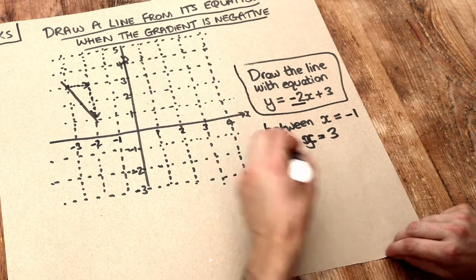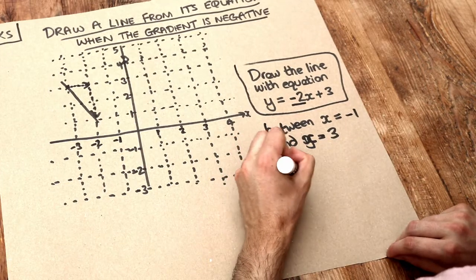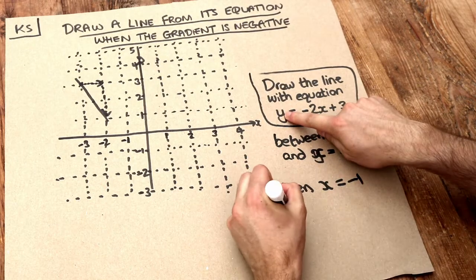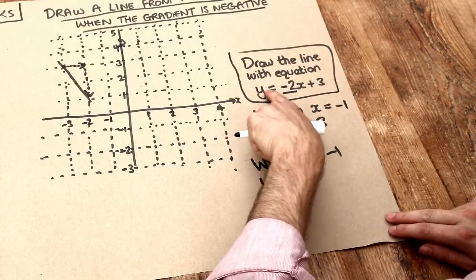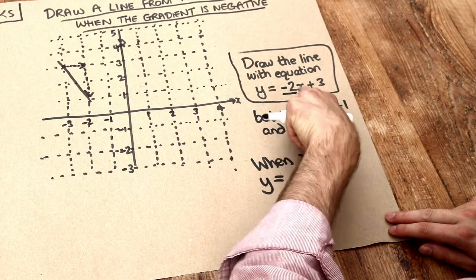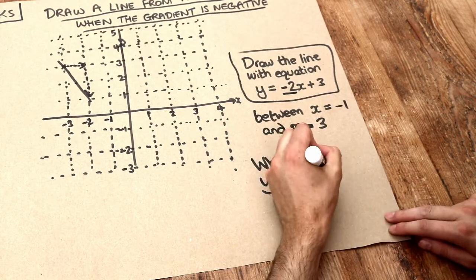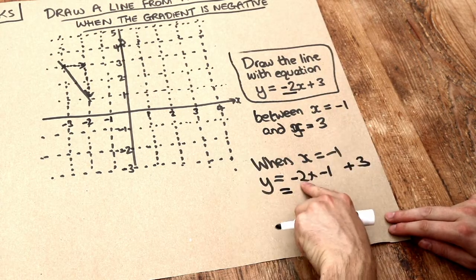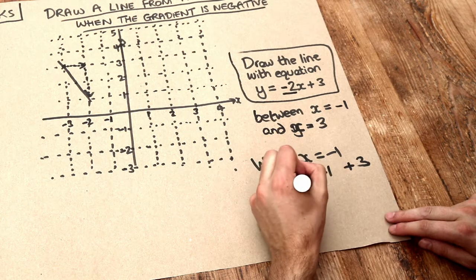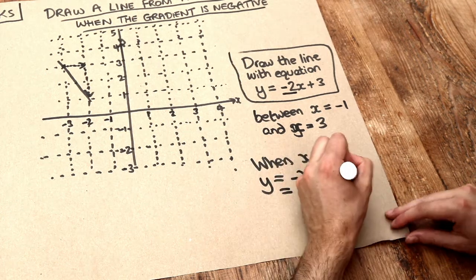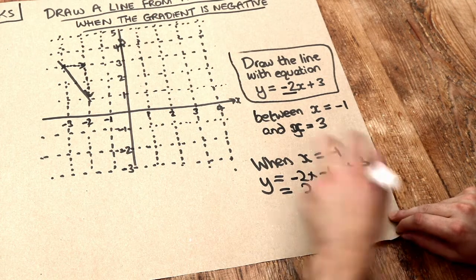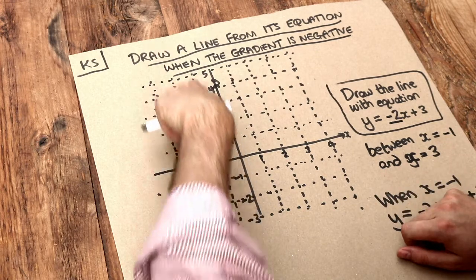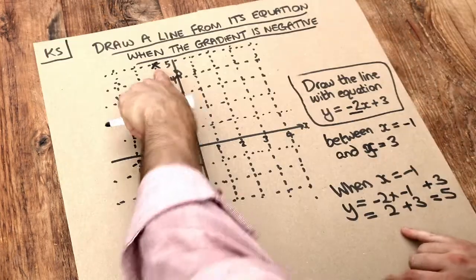So let's try it for x equals minus 1 first. When x is minus 1, we substitute it into the equation to work out what y would have to be to make the equation true. So y equals minus 2 times minus 1, plus 3. Negative times negative is positive, and 2 times 1 is 2, so it's 2 plus 3, which is 5. So when x is minus 1, y is 5 — that's minus 1 on the x-axis, y is 5, so it's going to be here. We've got one point on the line.